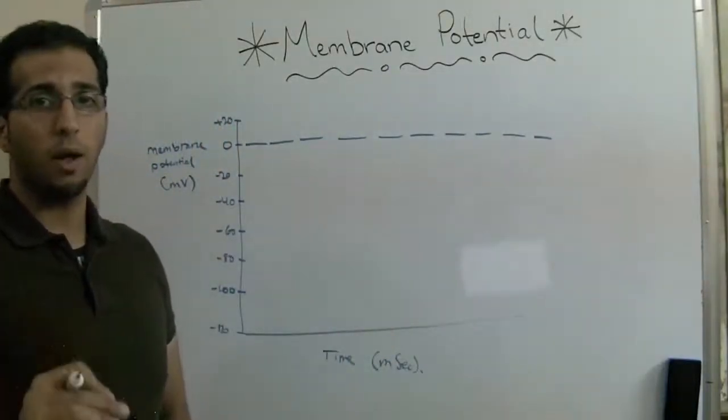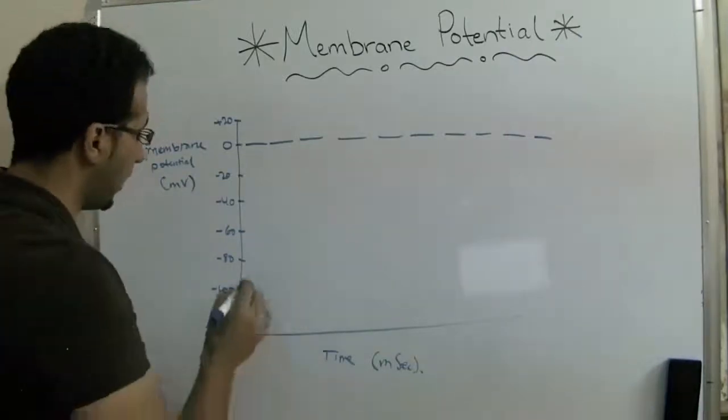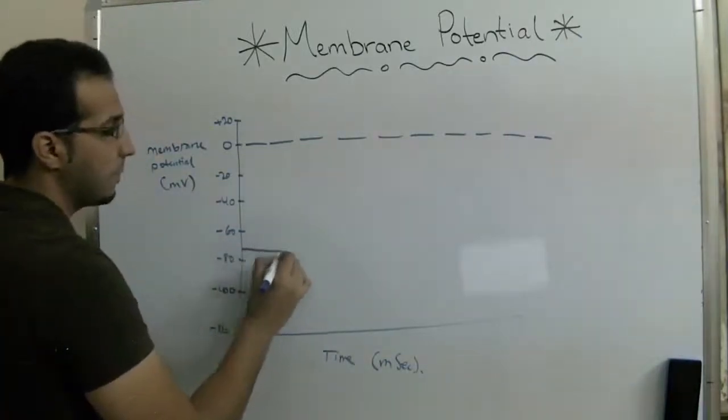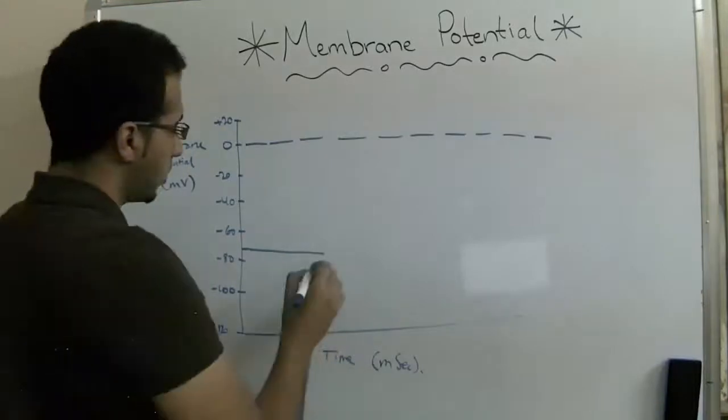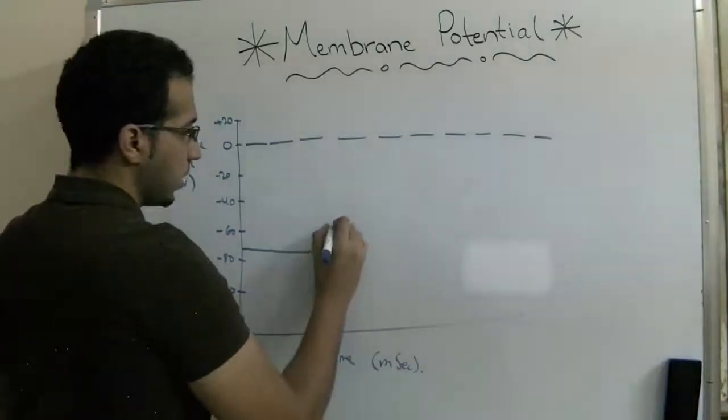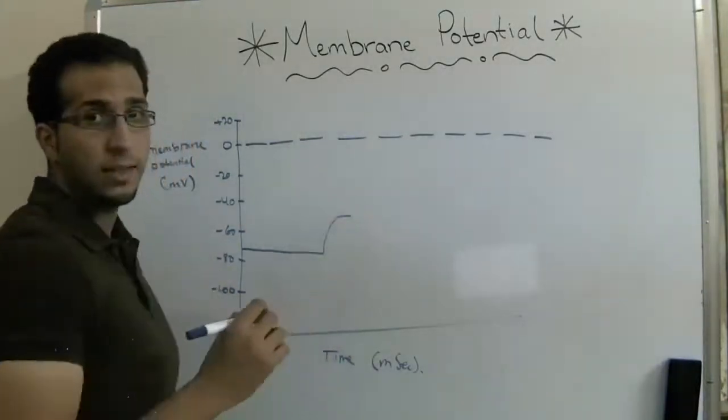So usually in an action potential, the myocardial cell action potential starts at negative 70. When the action potential starts, it starts a curve which increases like this, called the depolarization.